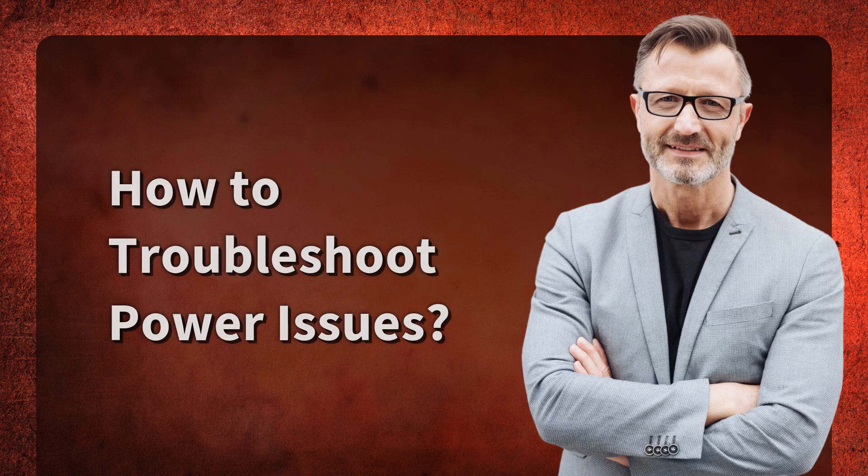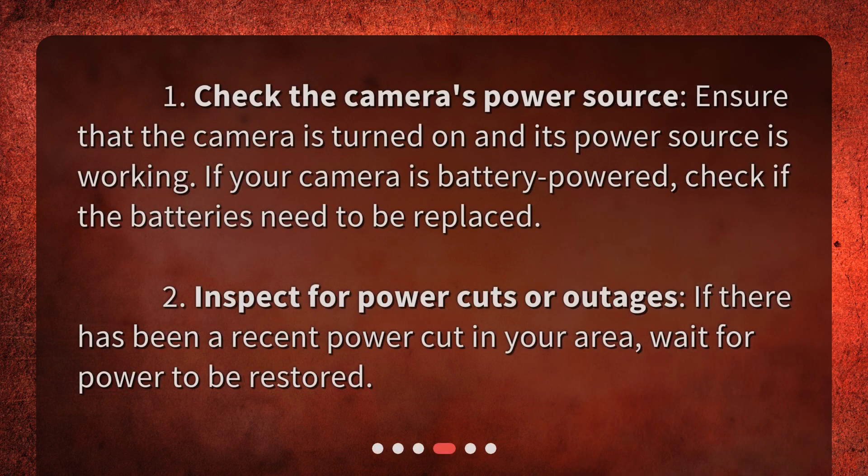How to troubleshoot power issues: 1. Check the camera's power source — ensure that the camera is turned on and its power source is working. If your camera is battery-powered, check if the batteries need to be replaced. 2. Inspect for power cuts or outages. If there has been a recent power cut in your area, wait for power to be restored.